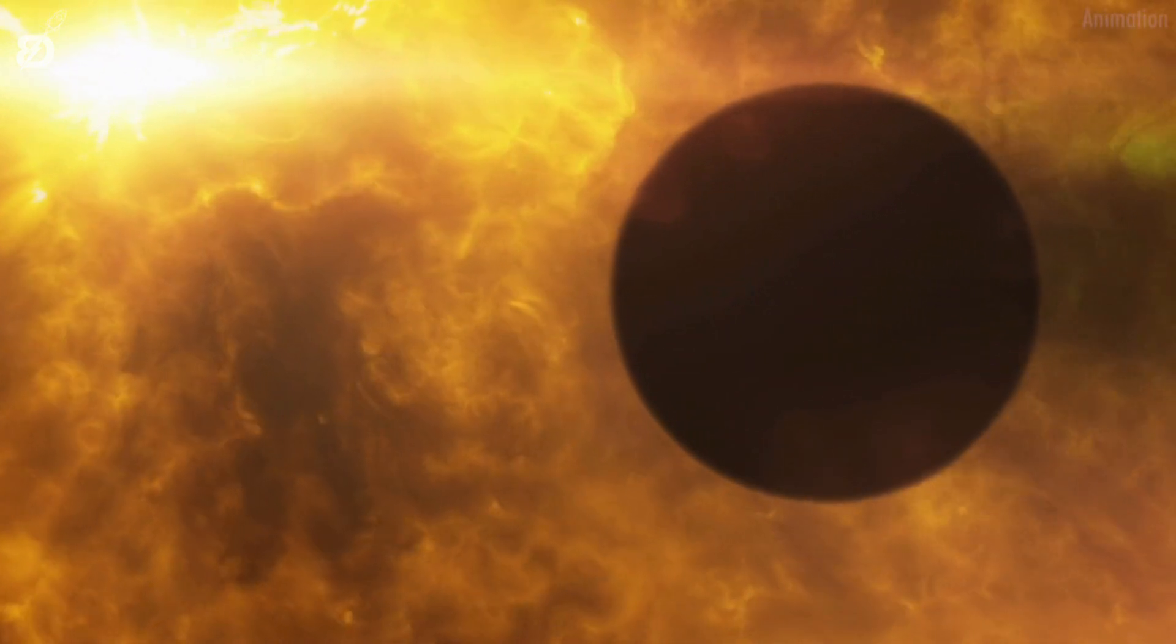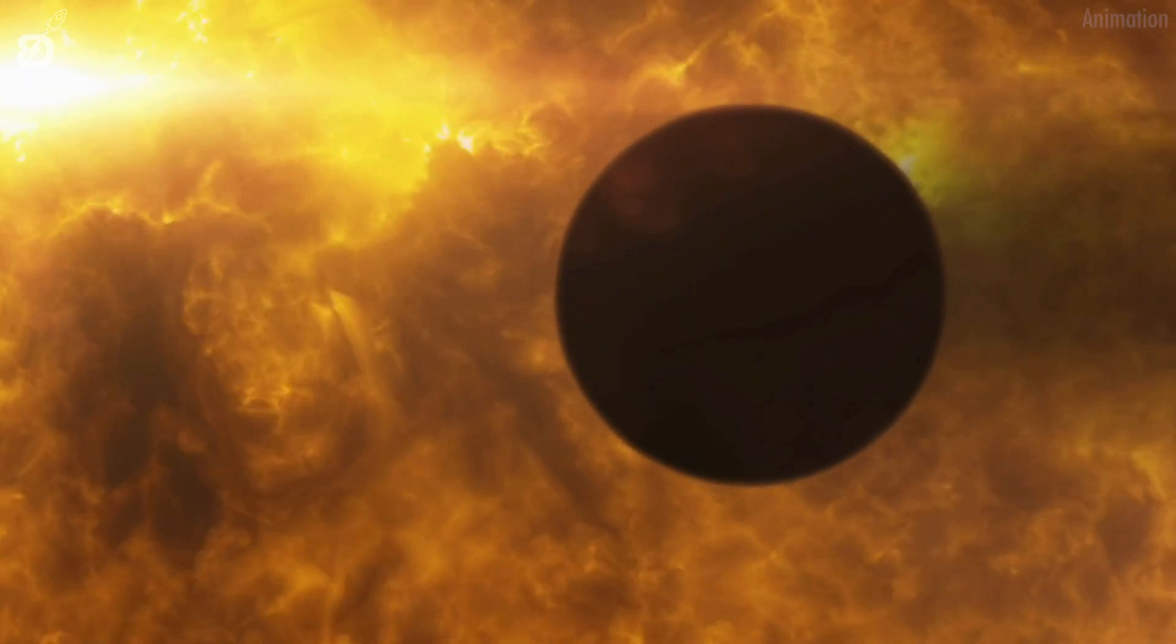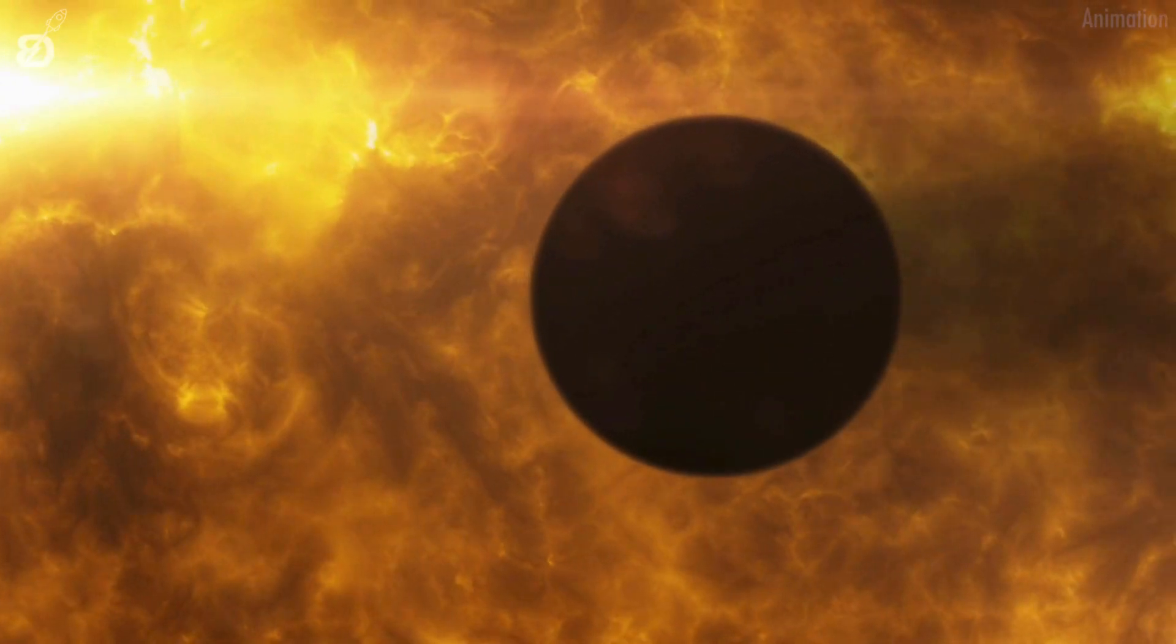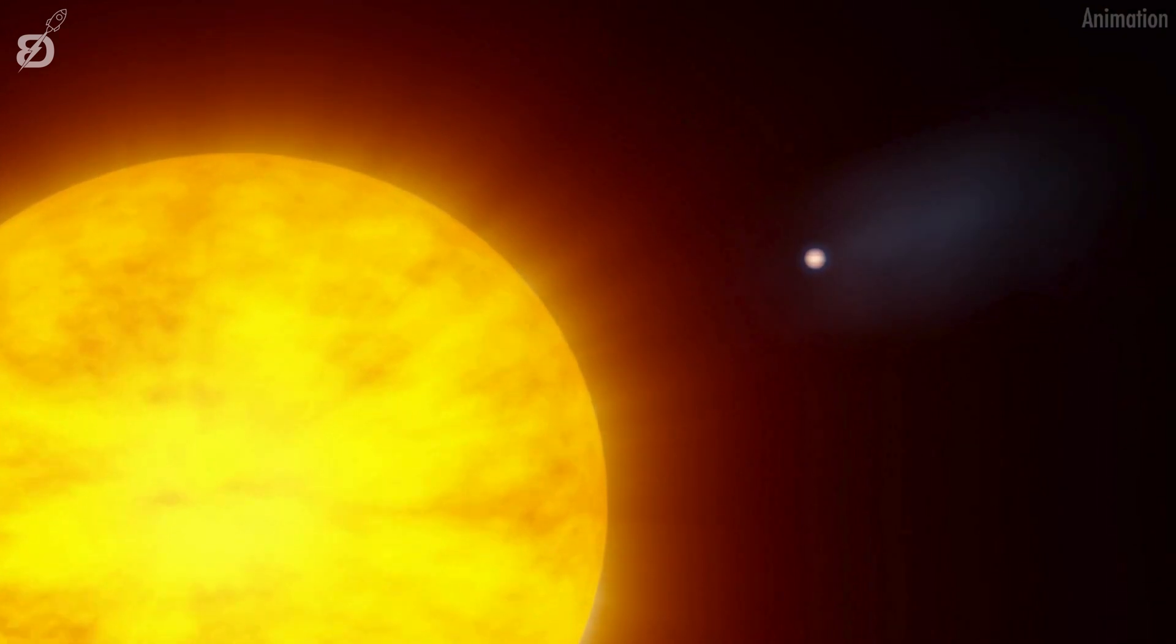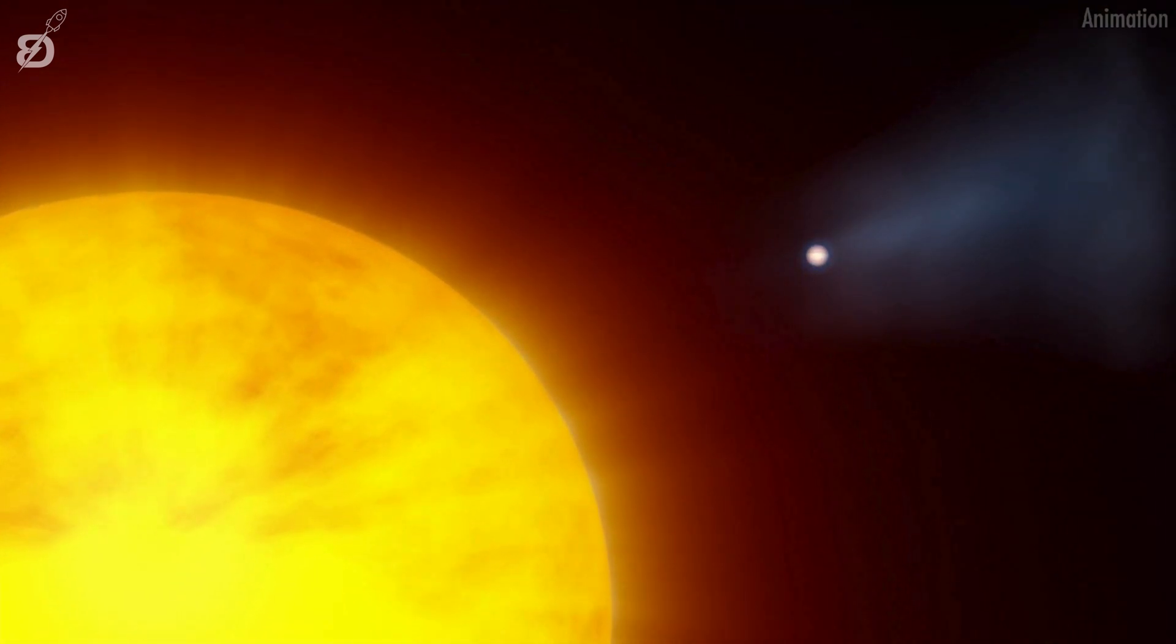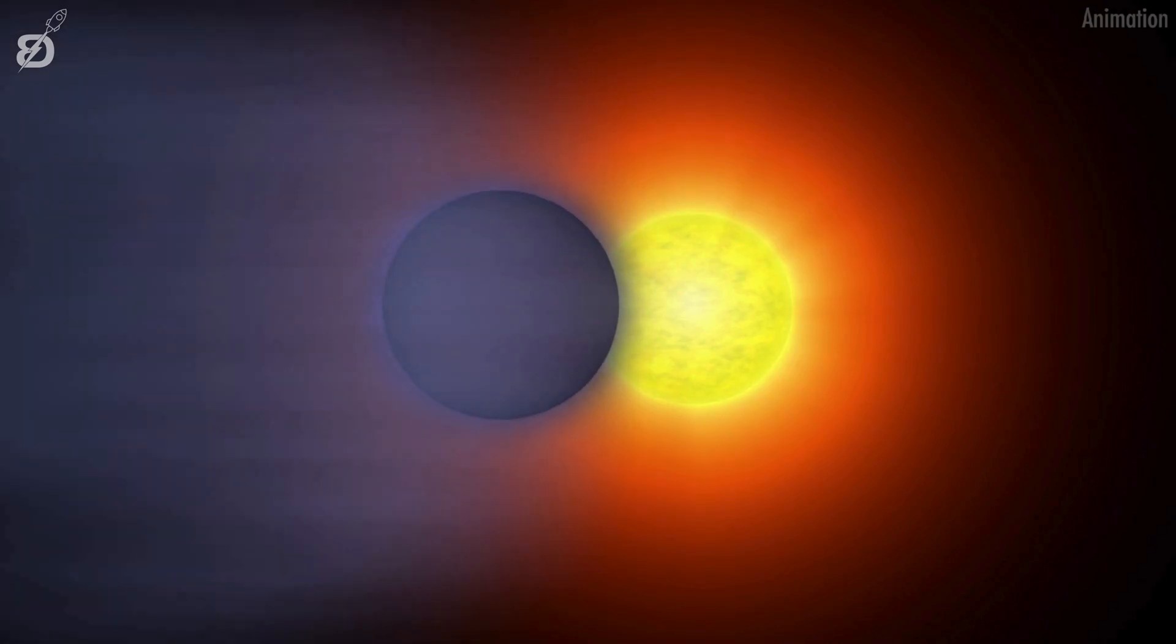Unlike most planets, the atmosphere of 55 Cancri E is unstable. The outgassing process tries to bulk up the atmosphere, while the extreme radiation and solar wind from the star blow it away. But these two processes are not in balance, leading to the situation where sometimes the planet has an atmosphere, and other times it doesn't.